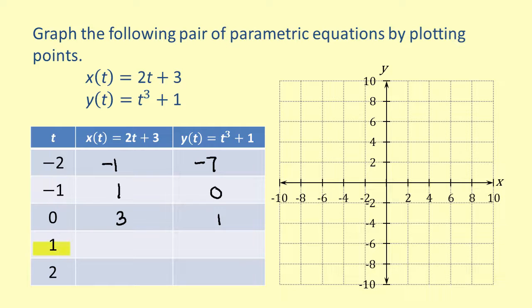Then, we get 5 for X and 2 for Y when T equals 1. And finally, X is equal to 7 and Y is equal to 9 when T equals 2.